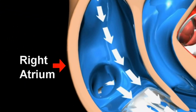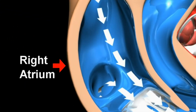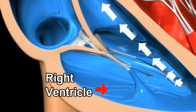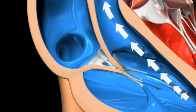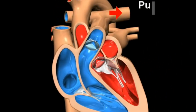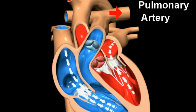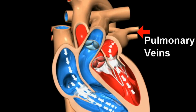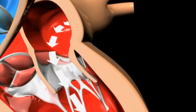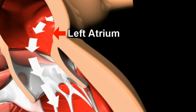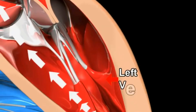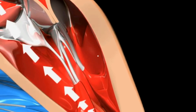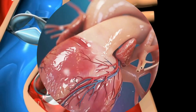The right upper atrium receives deoxygenated blood from the whole body; this blood is pumped into the right ventricle below. From there, blood is sent to the lungs for oxygenation through the pulmonary artery. After oxygenation, blood travels through the pulmonary vein and is received in the upper left chamber — the left atrium — which pumps it to the left ventricle below, and from here it pumps to the aorta, which sends this oxygenated blood to different parts of the body.